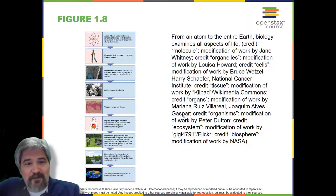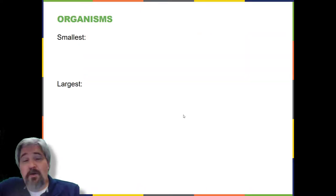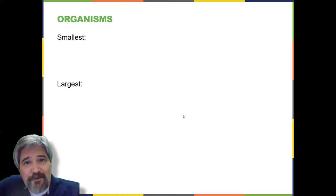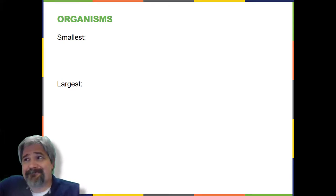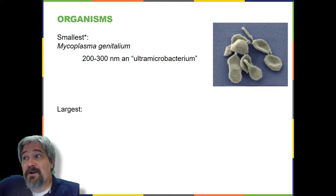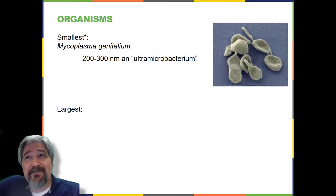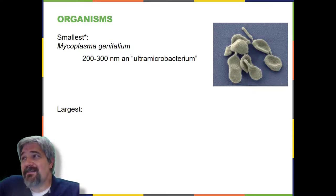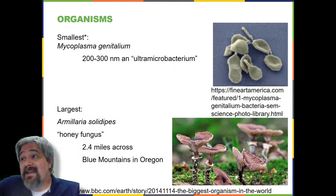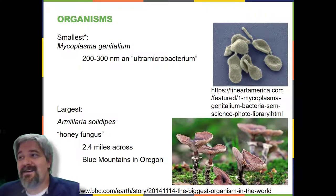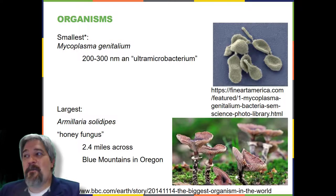Here's a little participatory part: what is the smallest organism? Mycoplasma genitalium — it will infect the urogenital tract and is incredibly small at 200 to 300 nanometers, which is why it's sometimes referred to as an ultra-microbacterium. Now the largest organism may surprise you: it is the honey fungus, and there is one that is 2.4 miles across in the Blue Mountains of Oregon.